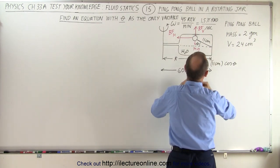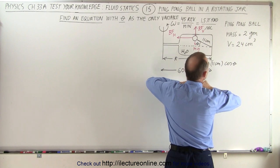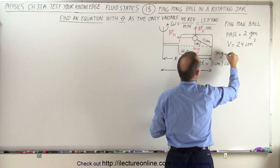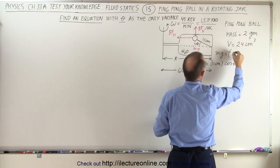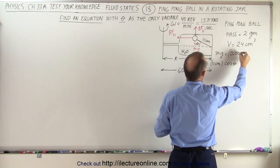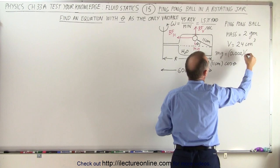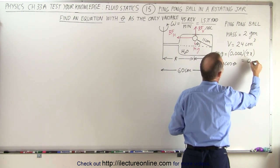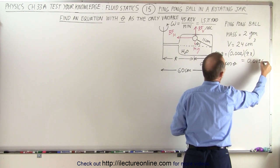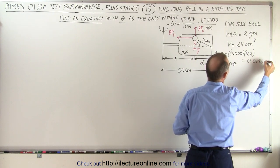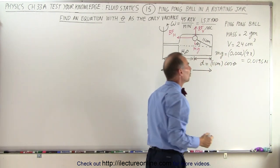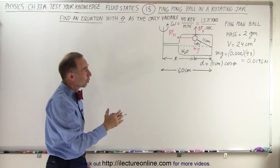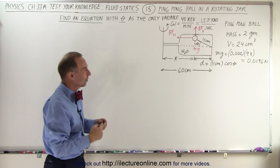We should also realize that there's a small amount of weight that pushes down, mg, which is going to be relatively small. The weight of the ping pong ball mg is equal to the mass, 0.002 kilograms, times g, which is 9.8, giving us 0.0196 Newtons. We'll first ignore that weight and then afterwards include it to see how much of a difference it makes.